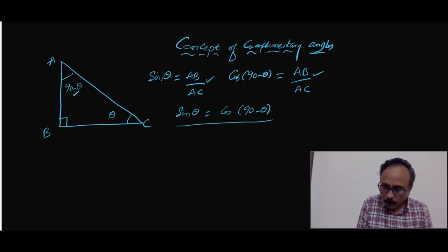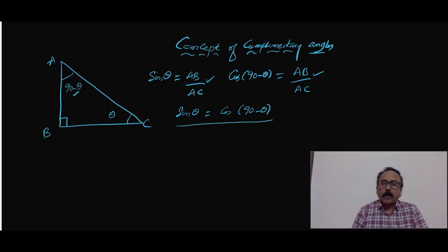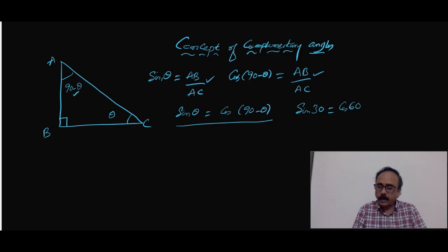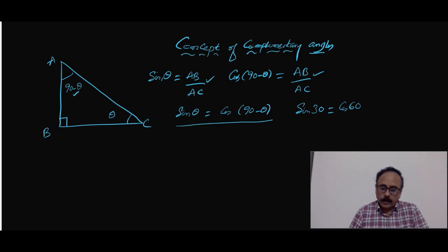If you closely watch these two, we can write sin θ is equal to cos(90 minus θ). That means these two are complementary to each other. So sin 30 can be written as cos 60, because cos(90 minus 30) equals cos 60. In fact, that is why cosine is named as the complementary of sine. So sin θ and cos θ are complementary to each other.